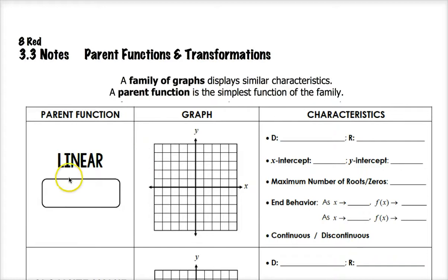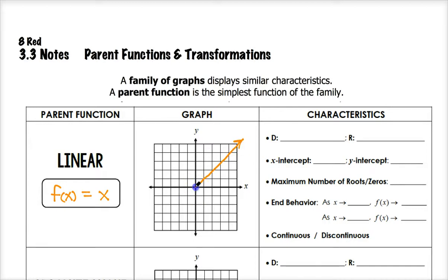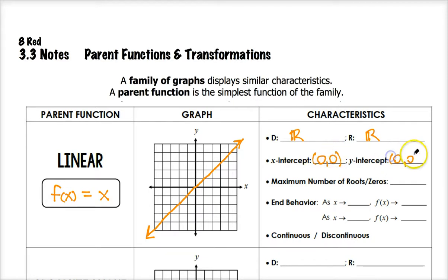We're going to start with linear functions. This is what we looked at in our last unit and the first big function family in Algebra 1. The parent function is f(x) = x, which graphs a line with a slope of positive 1 passing through the origin. The domain of that parent function is all reals, the range is also all reals — that's true for all diagonal lines. The x-intercept and y-intercept are both at the origin (0, 0).